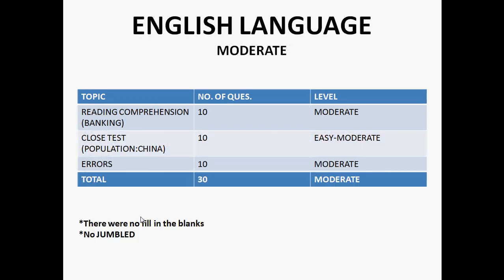Now the English language section. The level was moderate with 30 questions. There was a reading comprehension of 10 questions on the topic of banking, and one cloze test of 10 questions on China's population, which was easy to moderate. There were 10 questions from error detection, all of which were moderate. There were no fill in the blanks and no jumbled sentences, so overall the level was moderate.